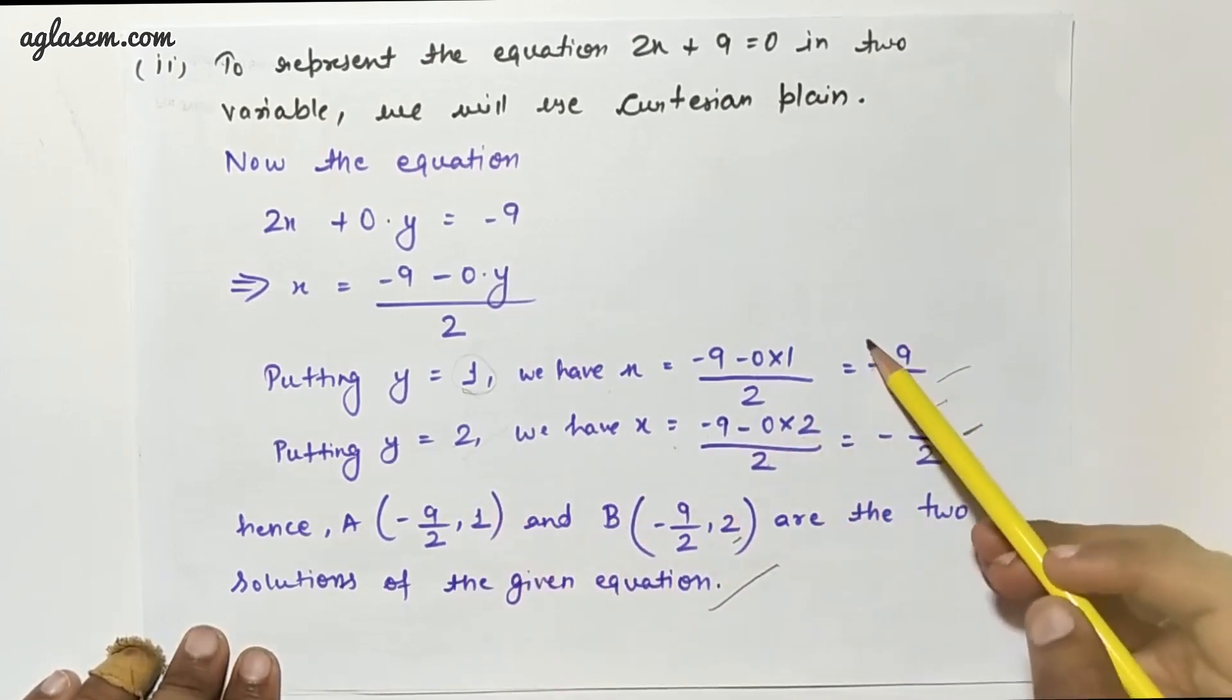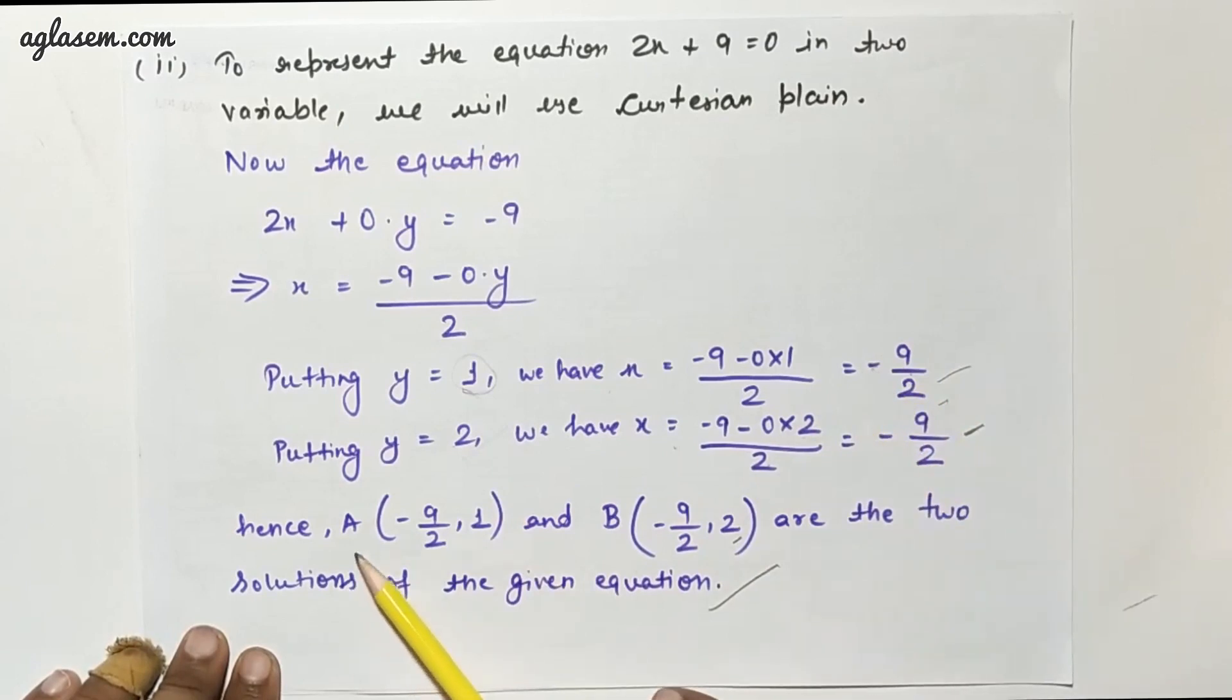Hence we get the two solutions: A is (-9/2, 1) and B is (-9/2, 2). These are the two solutions for the given equation.